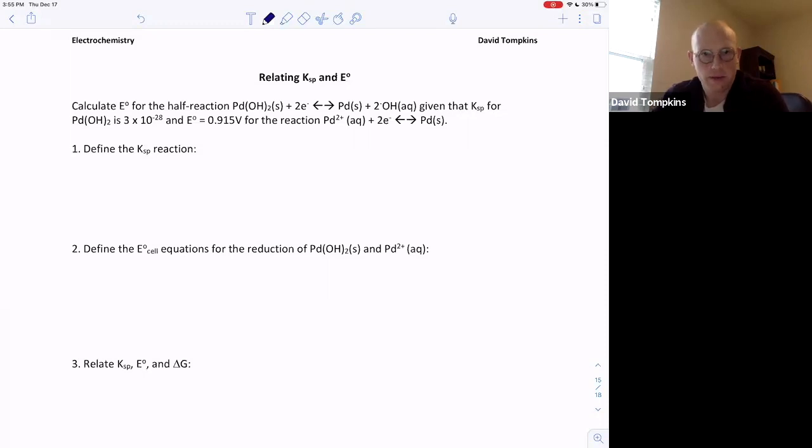In this lecture we're going to talk about an application of electrochemistry and we're going to relate Ksp, or the solubility product constant, with cell potential.